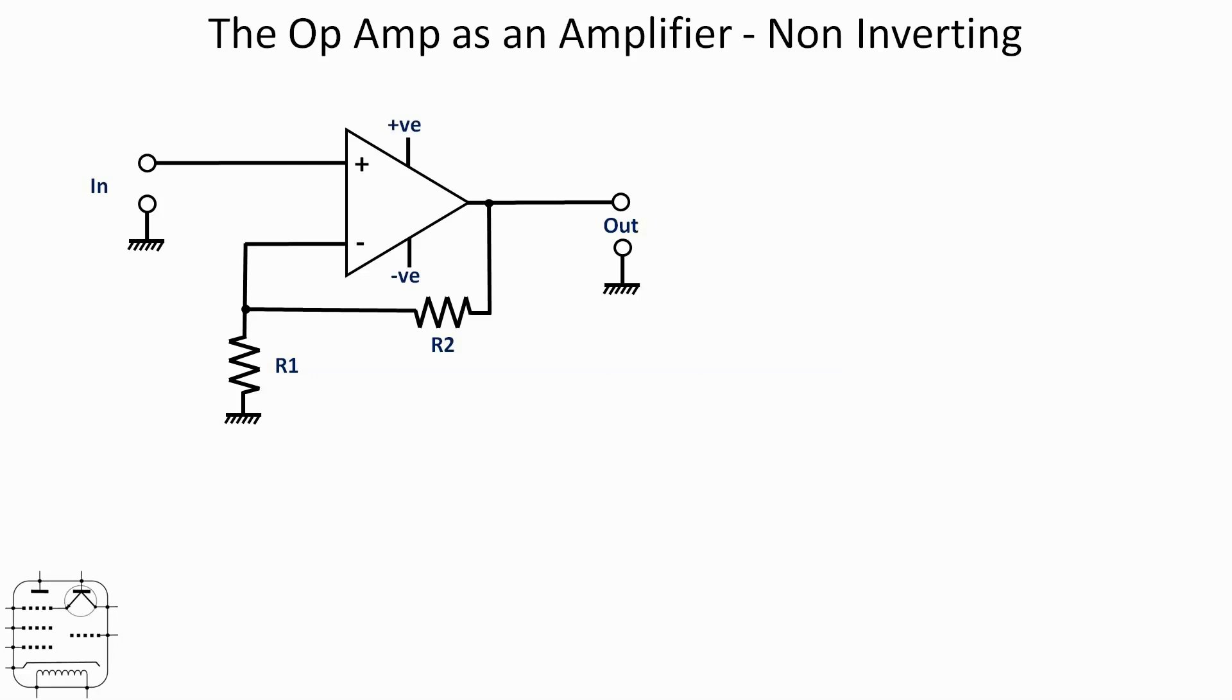That resistor effectively applies negative feedback into the amplifier. In other words, it controls the gain, and that's quite an important thing to do because it has a great deal of gain and we need to rein that in to a certain extent so that we can get some control.